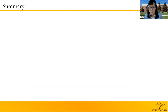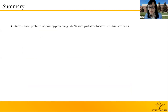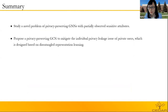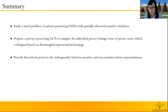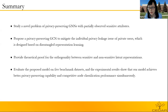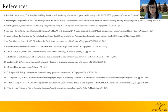Here is a summary of this study. First, we study a novel problem of privacy-preserving GNN with partially observed sensitive attributes. Second, we propose a privacy-preserving GNN model to mitigate the individual privacy leakage issue of private users, which is designed based on disentangled representation learning. Third, we provide a theoretical proof for the orthogonality between sensitive and non-sensitive latent representations. Finally, we evaluate the proposed model on five benchmark datasets, and the experimental results show that our model achieves better privacy-preserving capability and competitive node classification performance simultaneously. These are references for this presentation. Thank you.